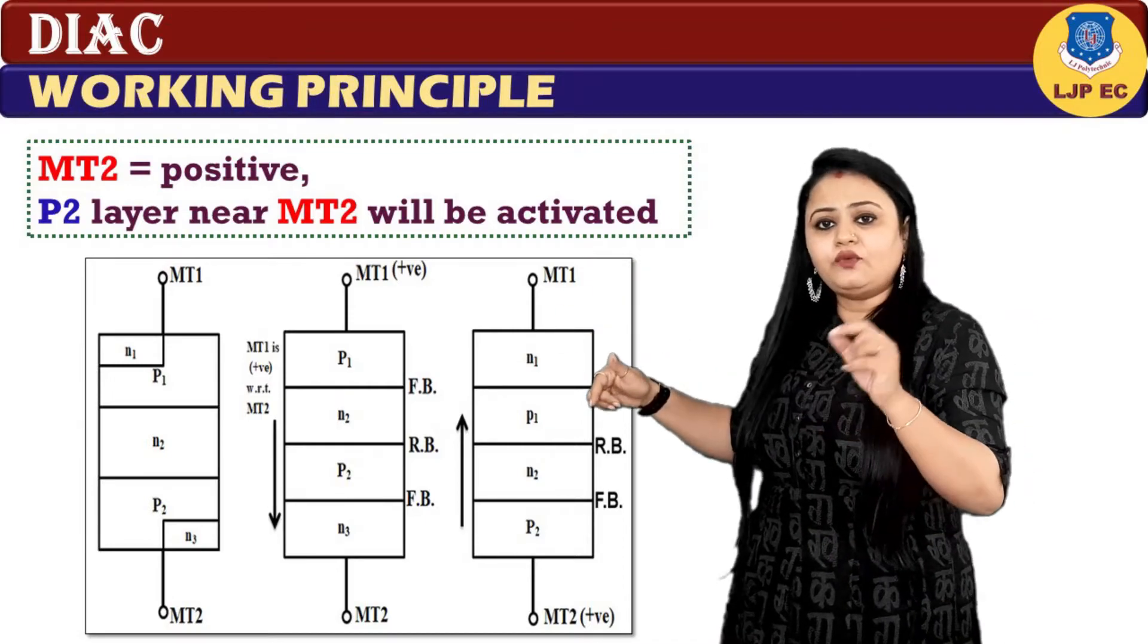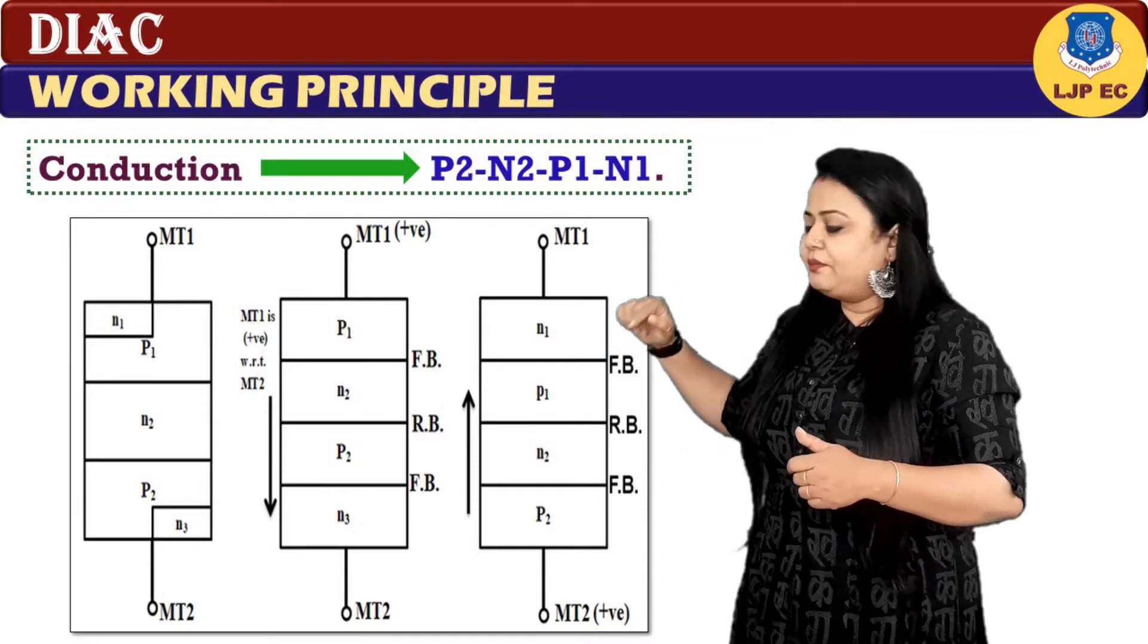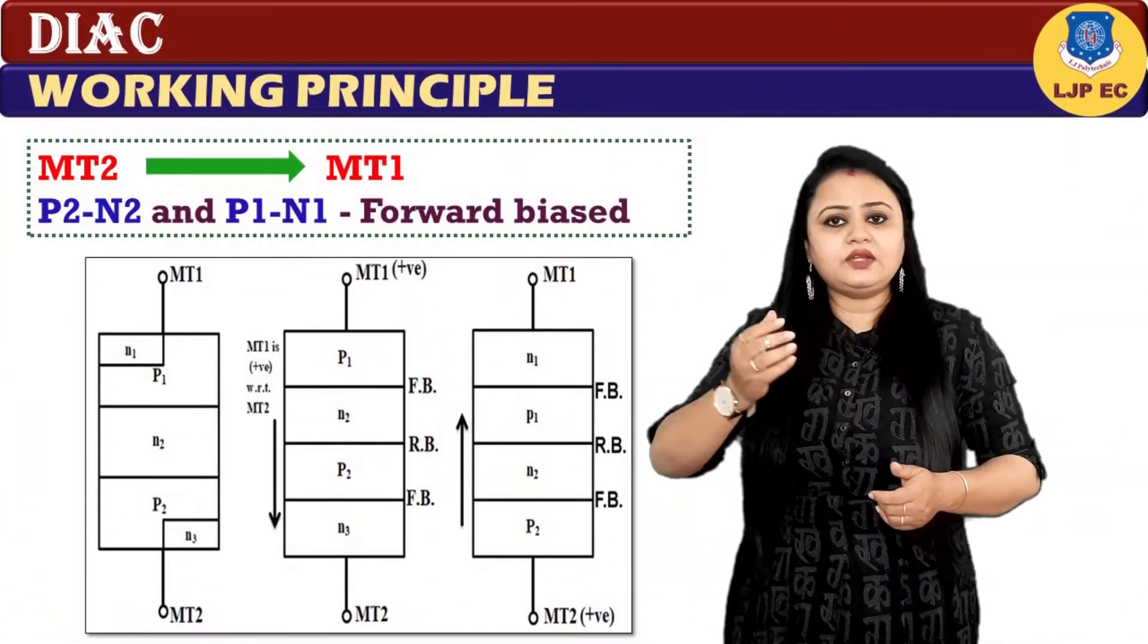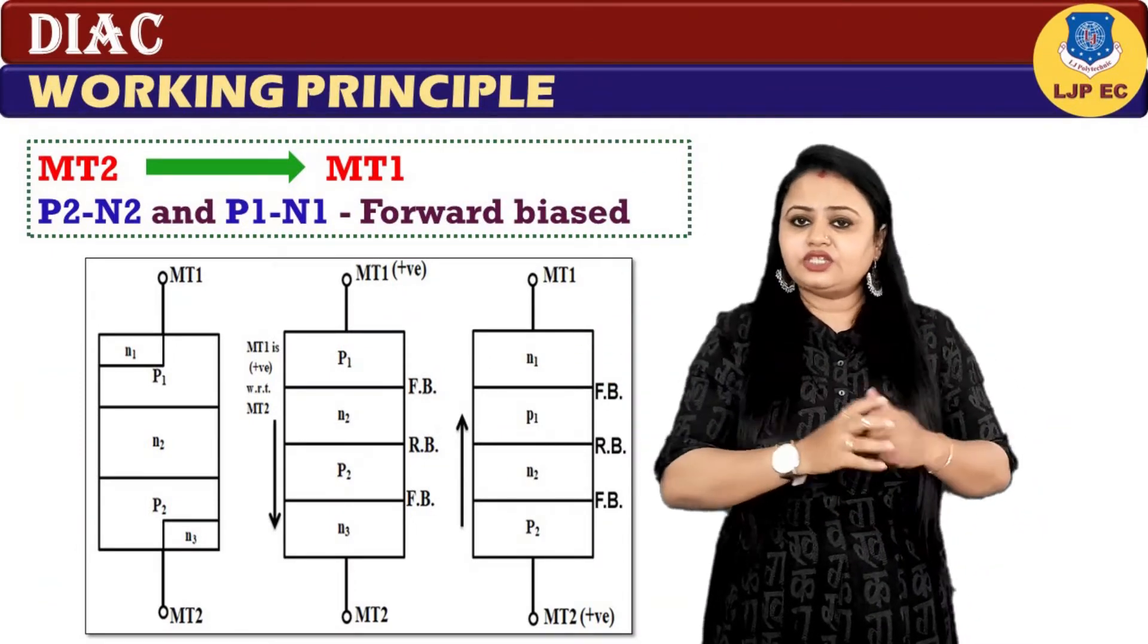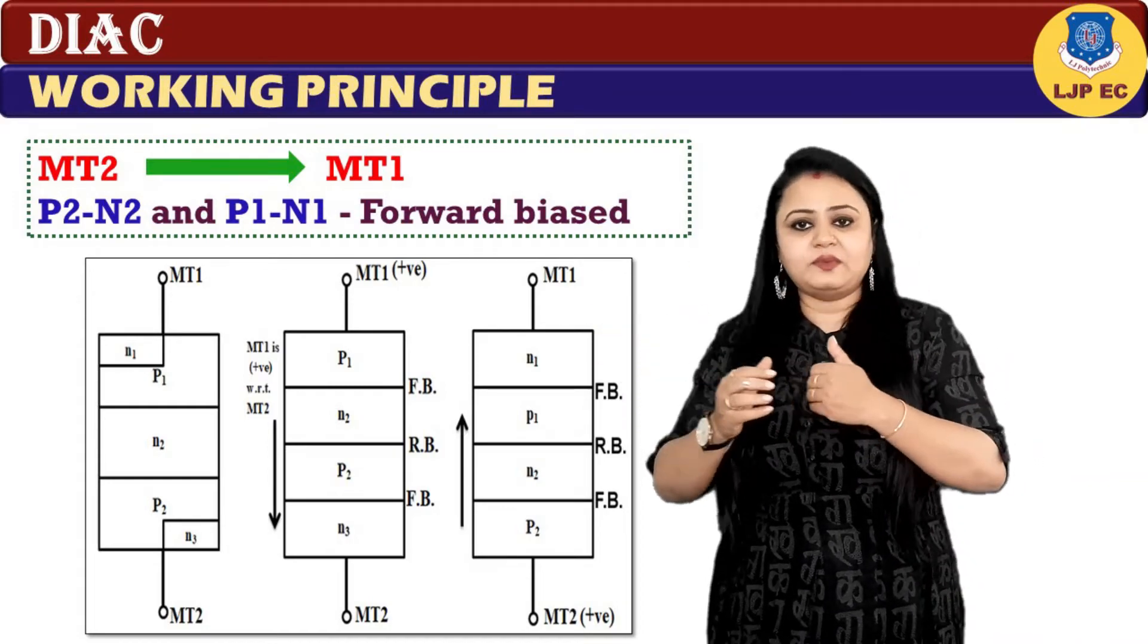The conduction will take place in the order of P2, N2, P1, N1. The current will be flowing from MT2 to MT1, and the junctions between P2-N2 and P1-N1 are forward biased, and the junction between N2-P1 is reverse biased.